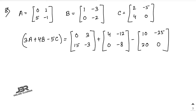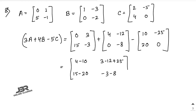Now add all three matrices place-wise: 0+4+(-10)=-6, 3+(-12)+25=16, 15+0+(-20)=-5, -3+(-8)+0=-11. That is your answer: [-6, 16, -5, -11].